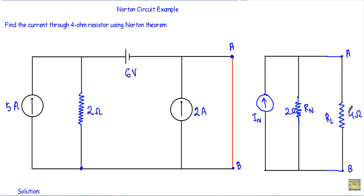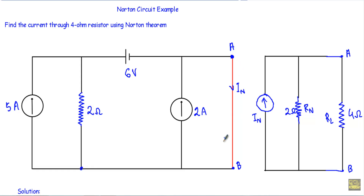Our load resistor of 4 ohms was connected between the A and B terminals. To calculate the Norton current, I short the A and B terminals and the current flowing through this short path for all 3 sources will be our Norton current. Since we have 3 sources, I will use superposition theorem to calculate the Norton current through this short path.